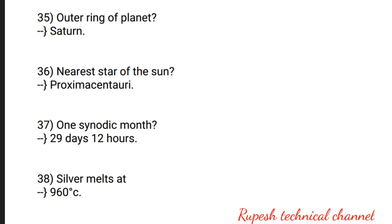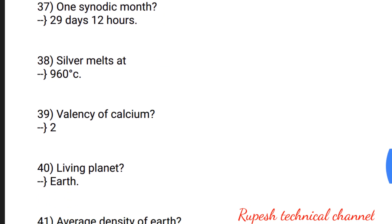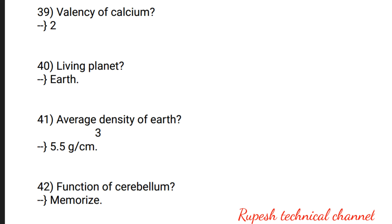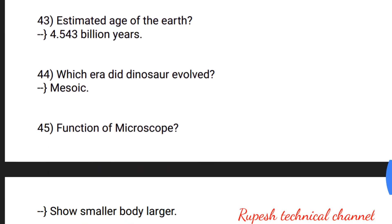Question number 36: nearest star to the sun. Question number 37: one synodic month — 29 days 12 hours. Question number 38: silver melts at 960 degrees Celsius. Question number 39: valency of calcium — 2. Question number 40: living planet — Earth. Question number 41: average density of Earth — 5.5 grams per cubic centimeter.